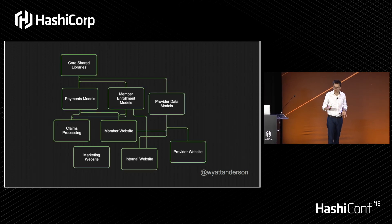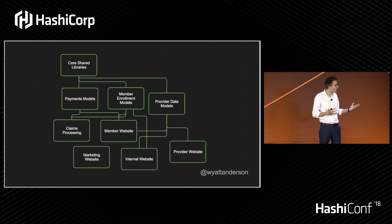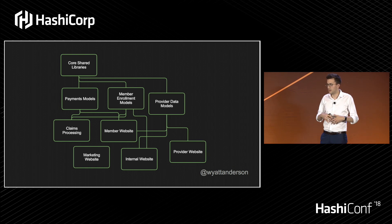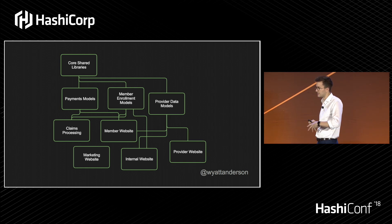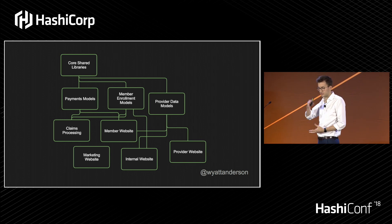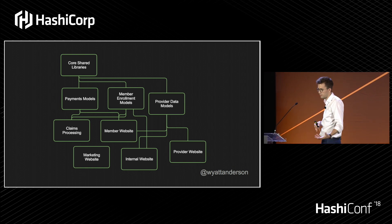A hypothetical view of what our architecture might look like — and this is radically simplified. You might have core libraries, payments models, member enrollment models, and provider data all tied into claims processing, our member website, the marketing website, the internal website, and the provider website. Traditionally you might organize all of these things into separate Git repositories and use a microservice architecture to communicate between them, publishing packages to an internal package repository to share core libraries and model code.